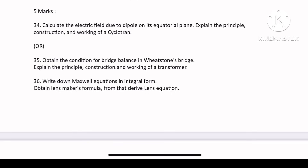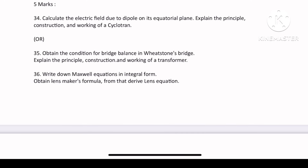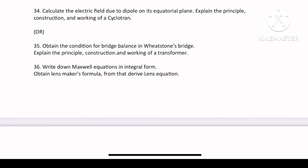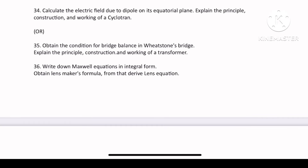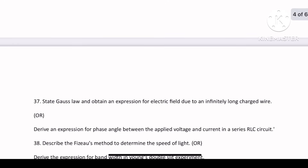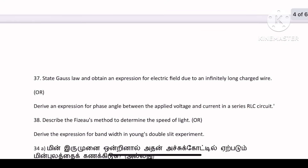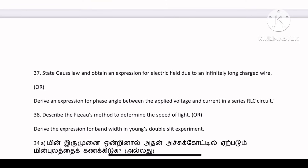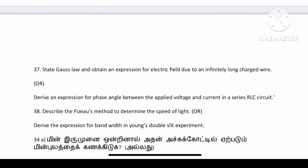The cyclotron. The Maxwell equations — write down Maxwell's equations. The integral formula. The lens maker's formula. From that, derive the lens equation. The gas law — may be 5 marks. The state of the gas law. Obtain and express the electric field due to an infinitely long charged wire. These are the topics I told you.